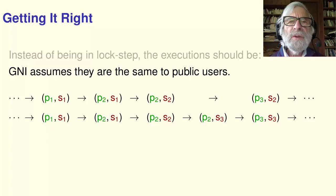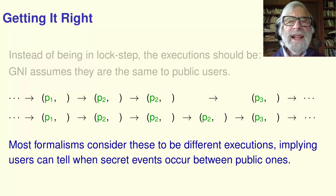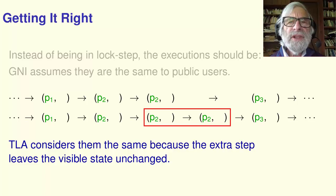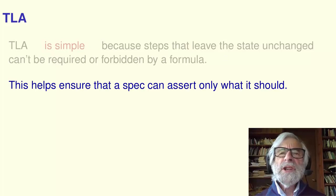GNI assumes these two executions appear the same to public users, who just see this. Most formalisms consider these to be different executions because of this extra state. But that means users can tell when secret events occur between public events. TLA considers these two executions to be the same because that extra step leaves the state seen by the user unchanged. TLA at first seems strange to most people because steps that leave the state unchanged can't be required or forbidden by a TLA formula. But that's one reason TLA is simple.